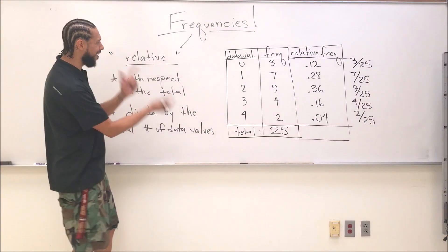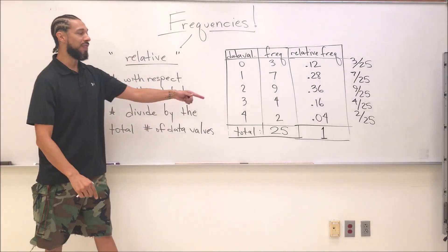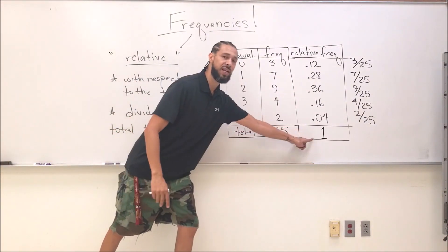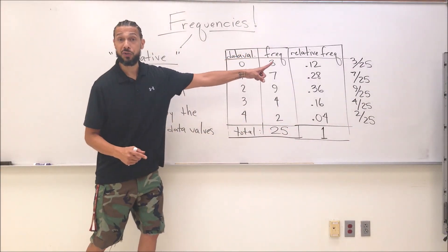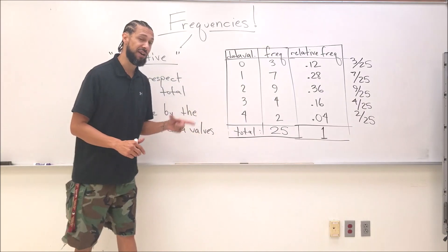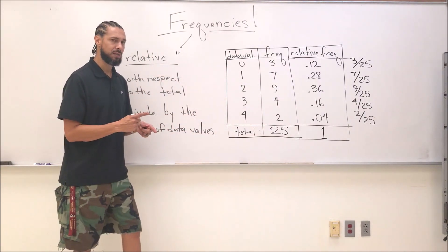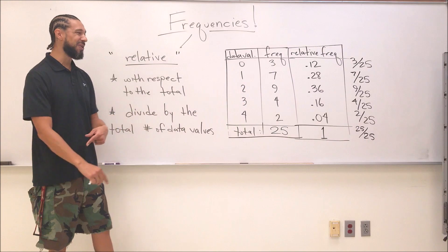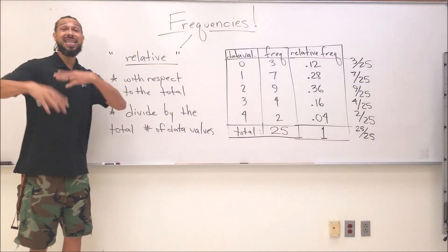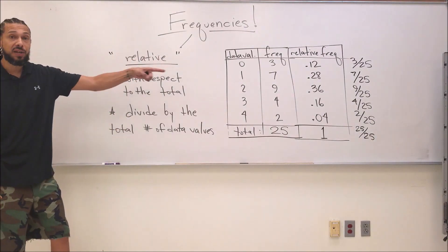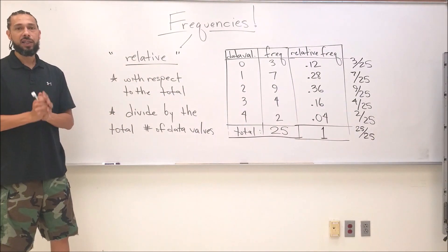If I added all those relative frequencies together, what do you think I would get? One. That one means I have a complete data set, that's 100%.